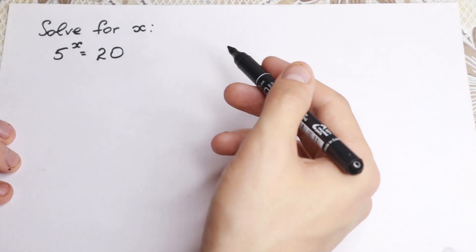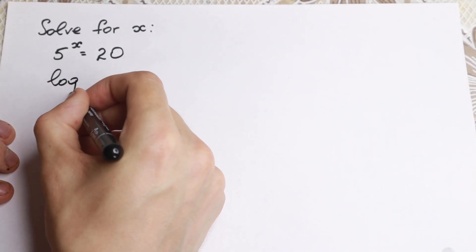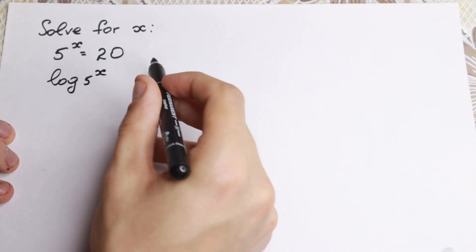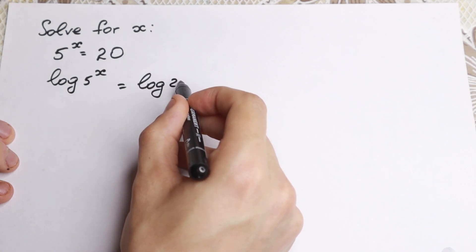So we need to take a log on both sides and step by step find our answer. Step by step, logarithm on the left, we have logarithm 5 to the x on the left hand side, and of course we need to apply logarithm on the right hand side, so logarithm 20.